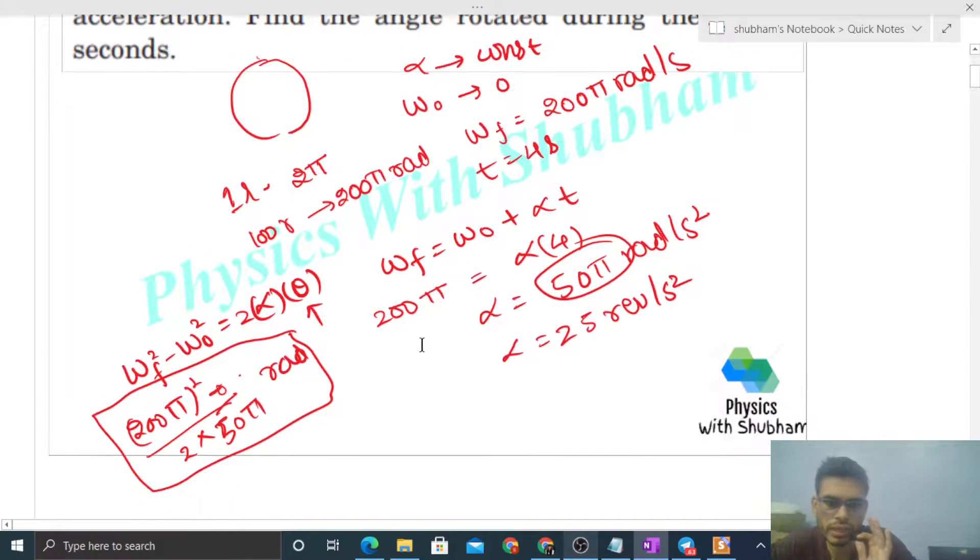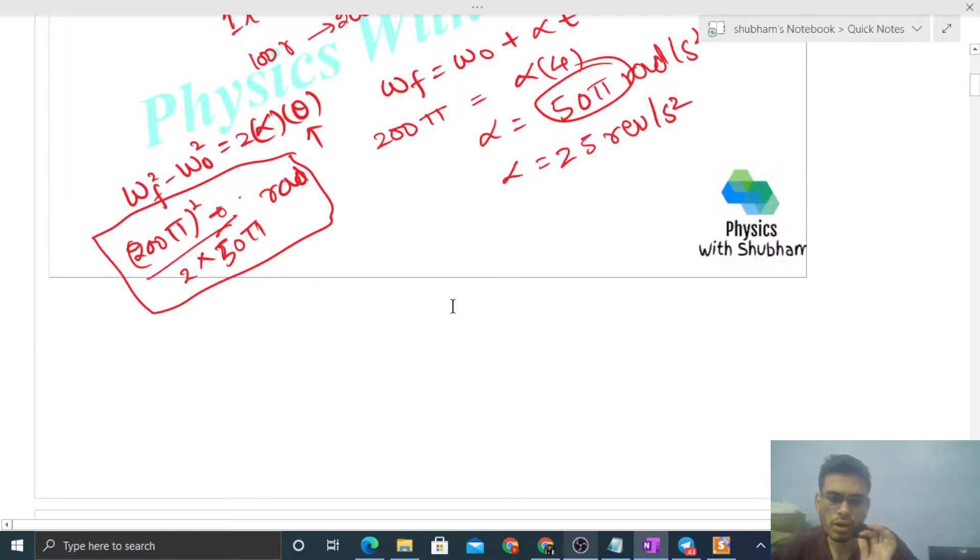Or you can use theta equals ut plus half of alpha t squared. Initial omega is zero, so ut is zero. Half of alpha value - alpha is 50π - times t squared will be 4 squared, this much radians. And if you want to find out number of revolutions, you can divide it by 2π.